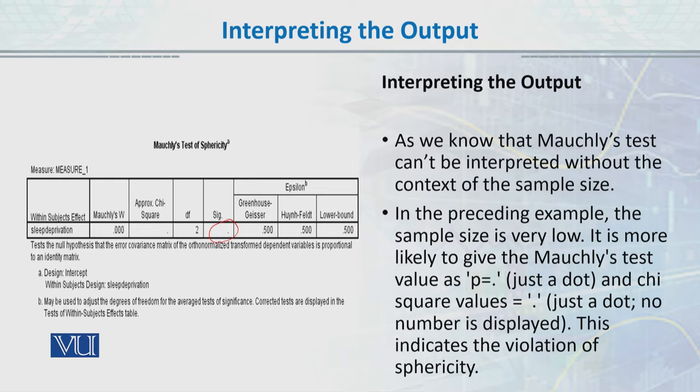Mauchly's Test cannot be interpreted without the context of the sample size. In the preceding example, the sample size is very low. It is more likely to give the Mauchly's Test value as just a dot, and chi-square value just a dot - no number is displayed. This indicates the violation of sphericity. If you have not calculated the Mauchly's Test value, then you have violated the assumption of sphericity.